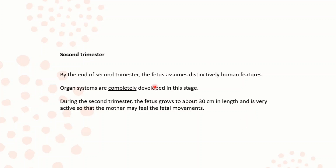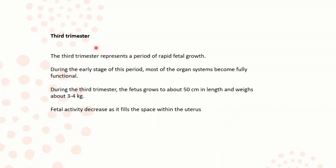The second trimester. By the end of the second trimester, the fetus assumes distinctly human features and the organ systems are completely developed. The fetus grows up to about 30 cm in length and is very active, so that the mother may feel fetal movements. The third trimester represents a period of rapid fetal growth. During the early stage of this period, most organ systems become fully functional. The fetus grows to about 50 cm in length and weighs about 3 to 4 kg. Fetal activity decreases as it fills the space within the uterus.